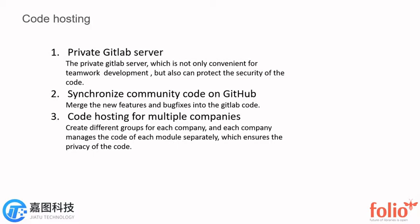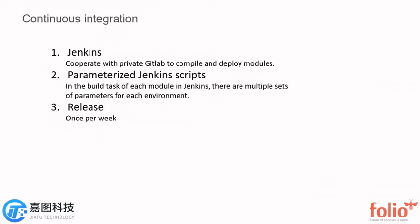Third, continuous integration. We use Jenkins together with private GitLab to build and deploy modules. We use parameterized Jenkins scripts for multiple environment management. In the build task of each module in Jenkins, there are multiple sets of parameters for each environment. When Jenkins builds modules, one of them would be passed into Jenkins, so that the module for that specific environment could be built.